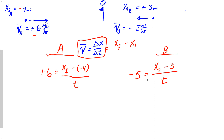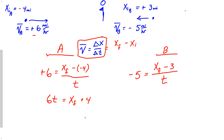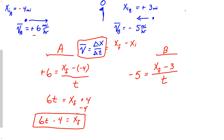All we need to do is solve one of these two equations for either x-final or t, and substitute into the other. I'll multiply both sides of the runner A equation by t to get: 6t equals x-final plus four. Solving for x-final by subtracting four from both sides gives: x-final equals 6t minus four.